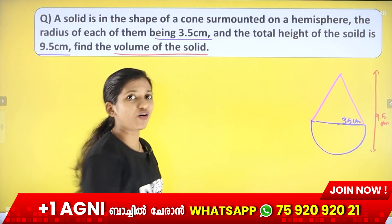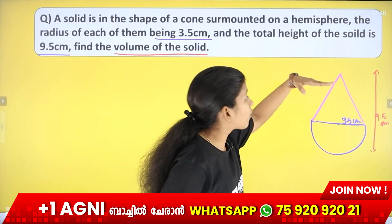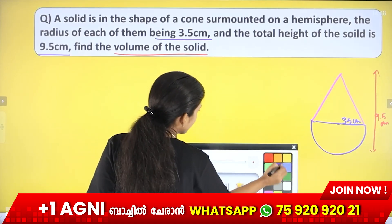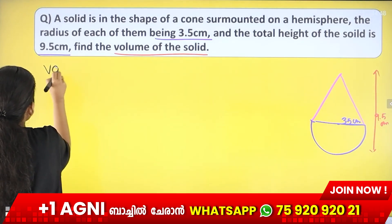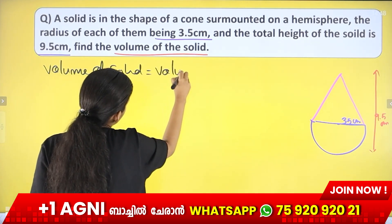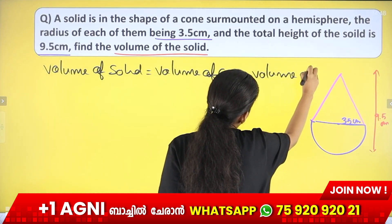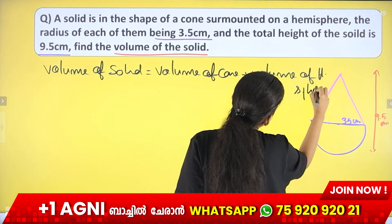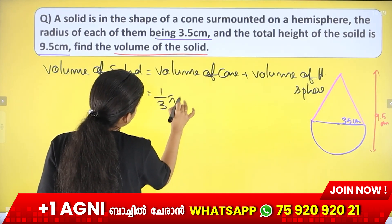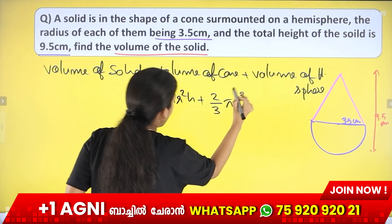Find the volume of this solid. If we want to find the volume of the solid, we use the equations for both the cone and the hemisphere. Volume of solid equals volume of cone plus volume of hemisphere. Volume of cone = 1/3 πr²h, plus volume of hemisphere = 2/3 πr³.